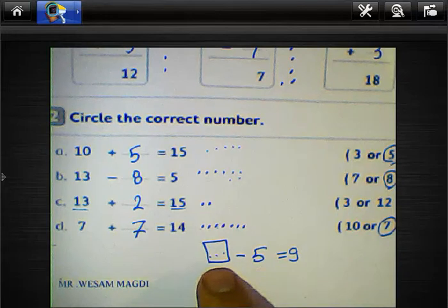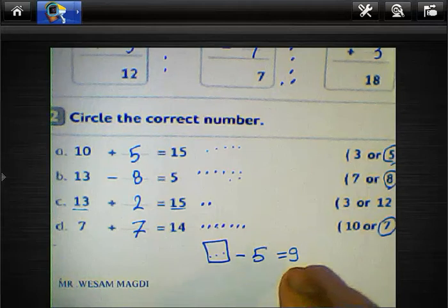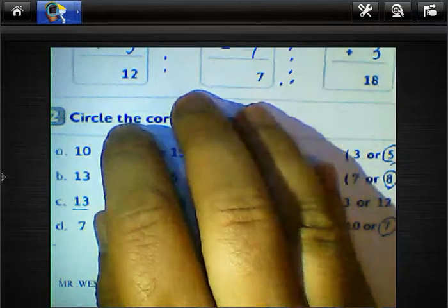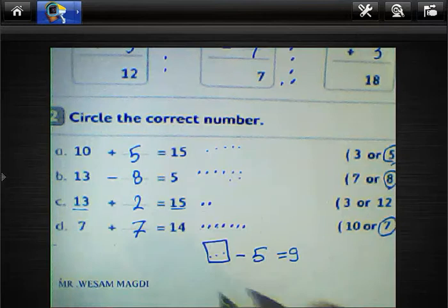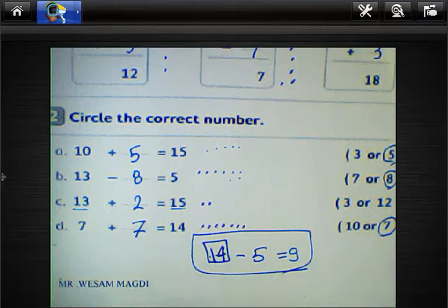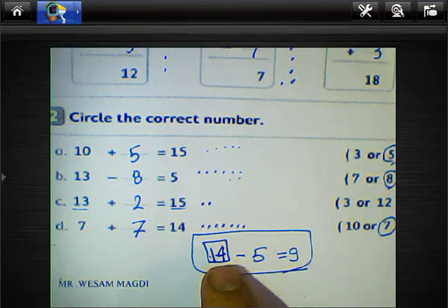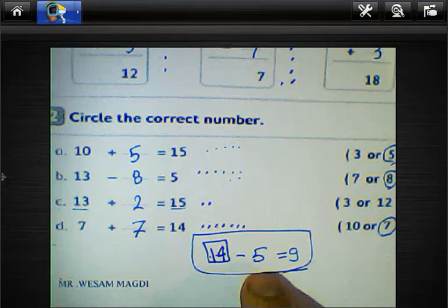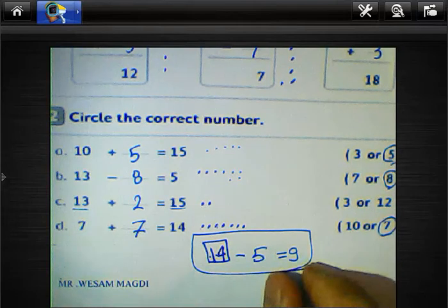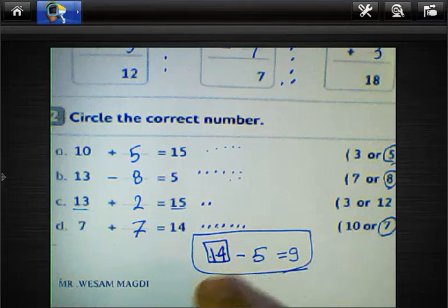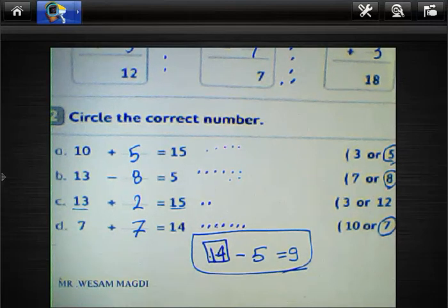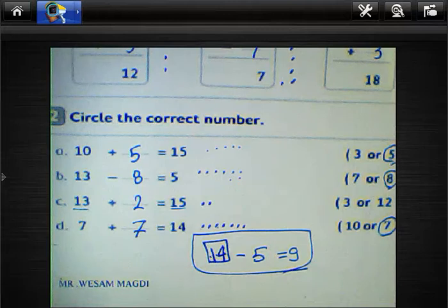Look at this example: blank minus 5 equals 9. In this example we must add 9 and 5, because we need to find the minuend. The minuend minus the subtrahend gives the difference. So to find the minuend, add 5 and 9. Count: 9 in your head and 5 on your hand — just after 9: 10, 11, 12, 13, 14 — so we must write 14 here.